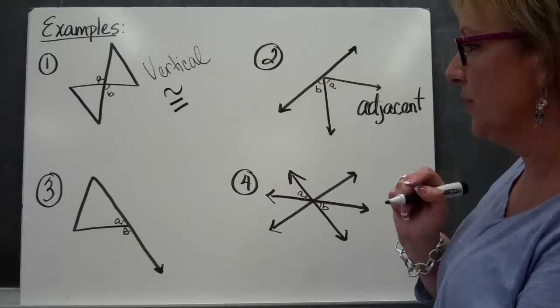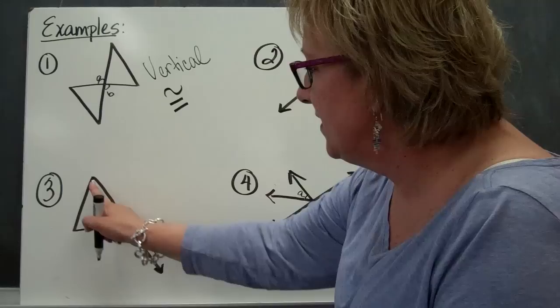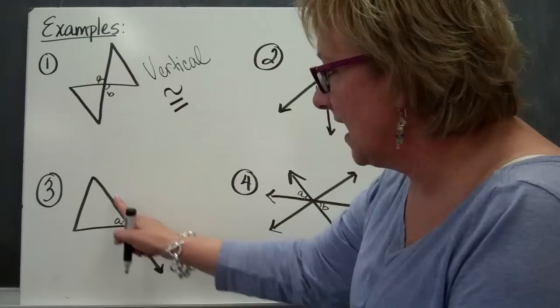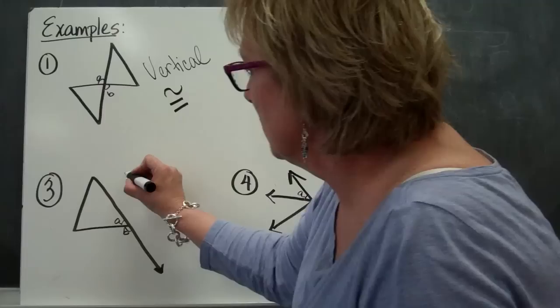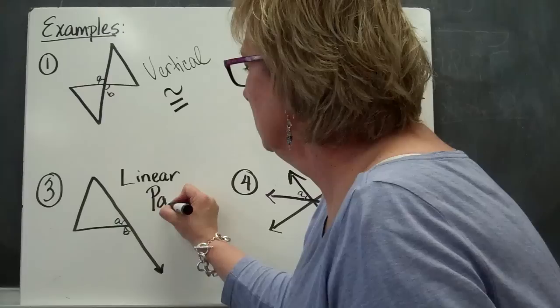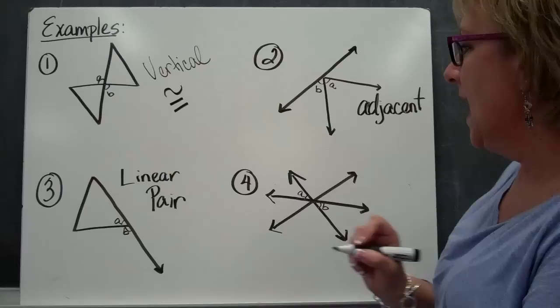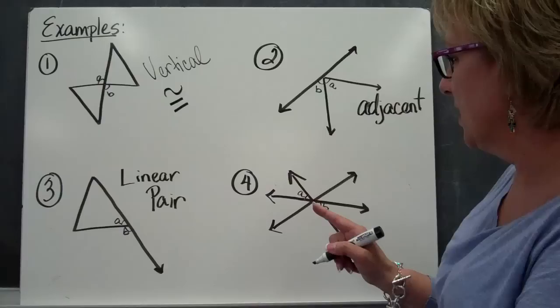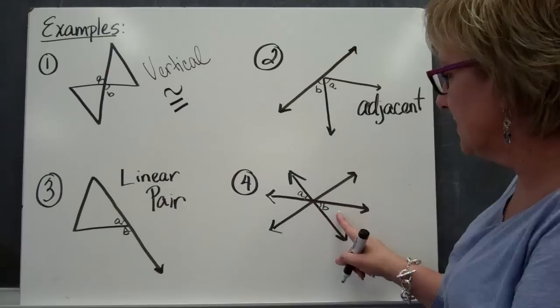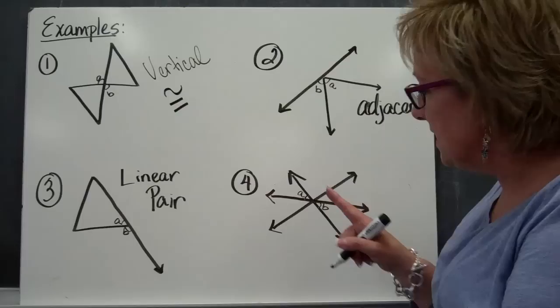Here it looks like I have a triangle with a long side. If you notice, these two angles A and B are adjacent, side by side, and they also make a 180-degree line. So I would call this a linear pair — angle A plus angle B together would have to equal 180 degrees. If I look at angle A and angle B in this next case, look at it as two kissing fish. They are right directly across from each other and they're going to meet right there at the center, so these are going to be called vertical angles.